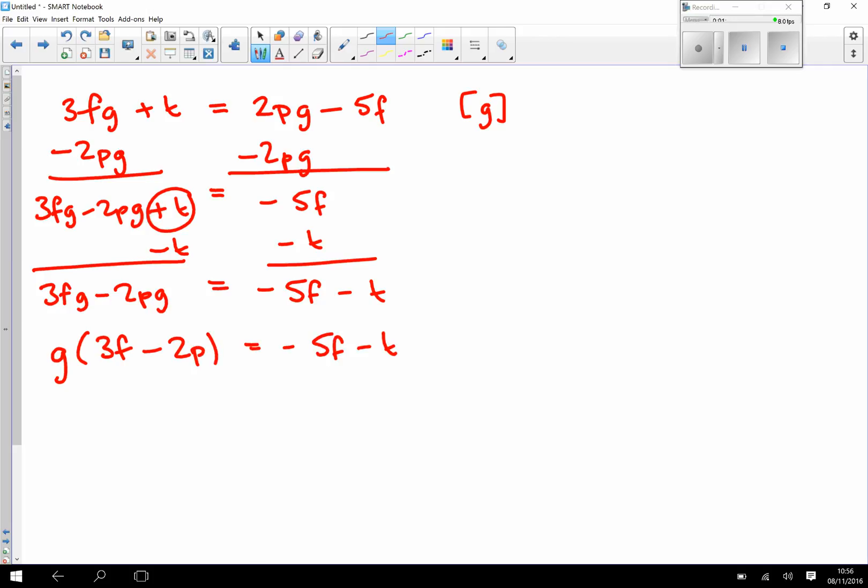And finally, we divide through by 3F minus 2P, because at the moment I am multiplying G by that. So we're left with an answer of G equals minus 5F minus T divided by 3F minus 2P.